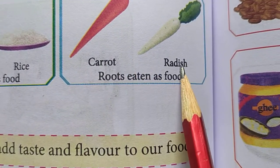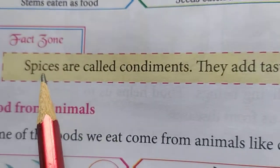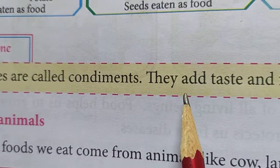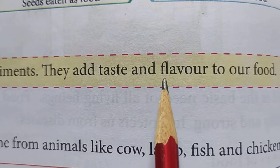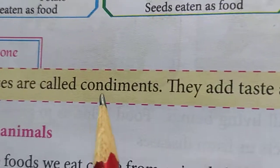Carrot and radish are roots eaten as food. Spices are called condiments. They add taste and flavor to our food.